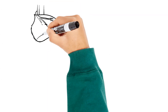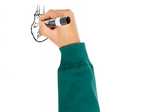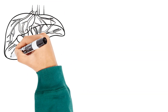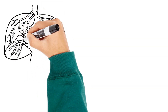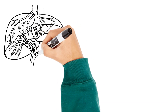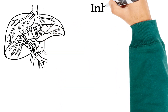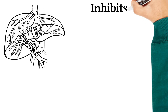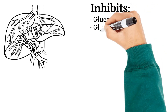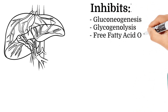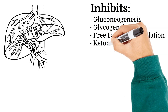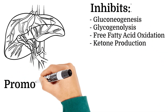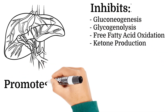In the liver, insulin reduces hepatic glucose production by decreasing gluconeogenesis, glycogenolysis, free fatty acid oxidation, and ketone production. It also promotes the uptake and utilization of glucose by increasing the expression of glucose transporters and activating glycolytic enzymes, as well as promoting glycogen synthesis to store excess glucose.